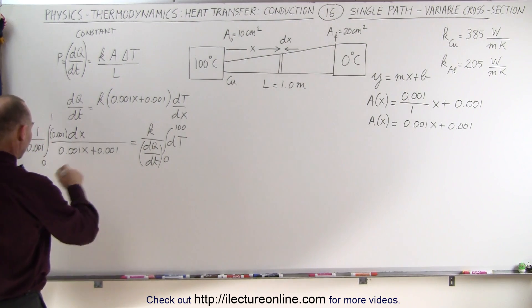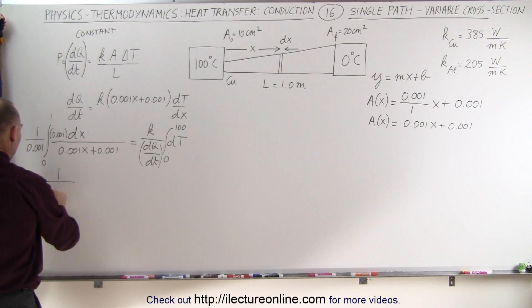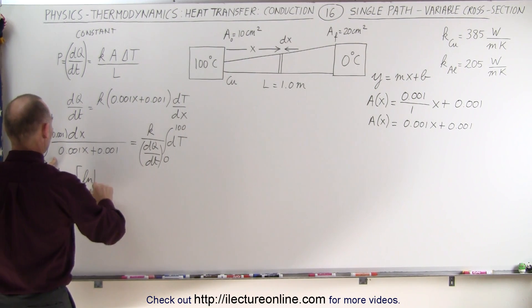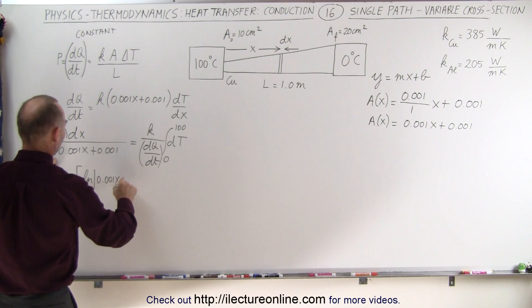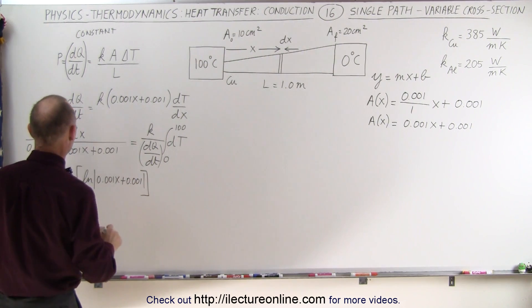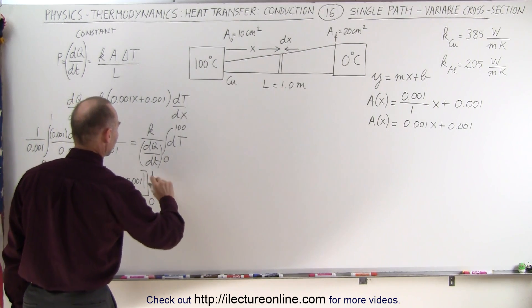When we do that, on the left side, we get 1 divided by 0.001 times the natural log of what's in the denominator. So that would be equal to 0.001x plus 0.001. Like that, evaluated from 0 to 1 is equal to...